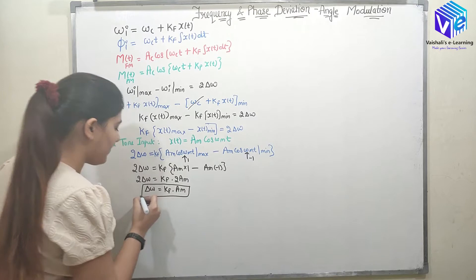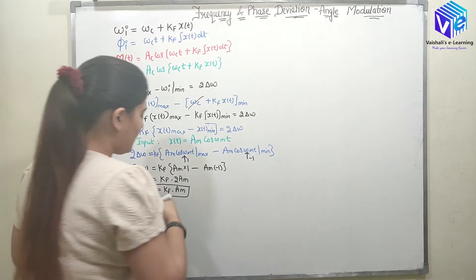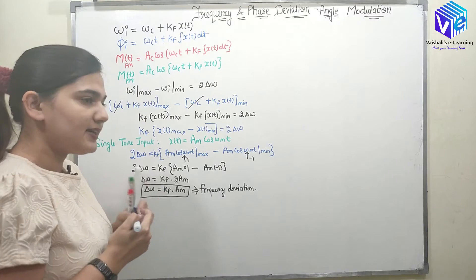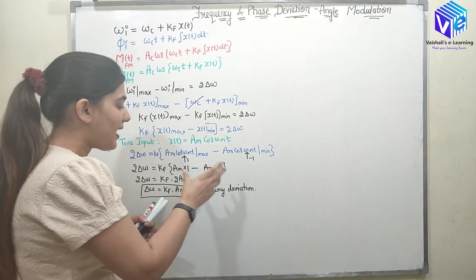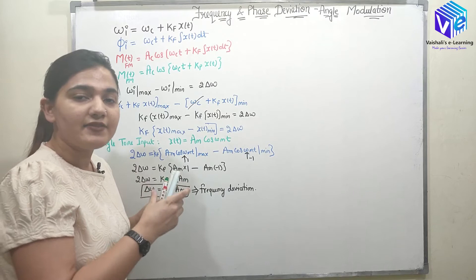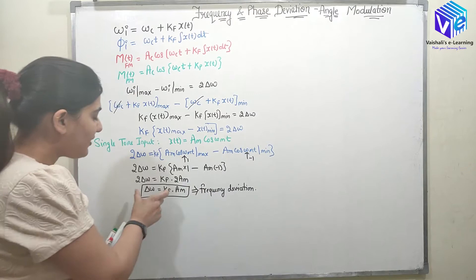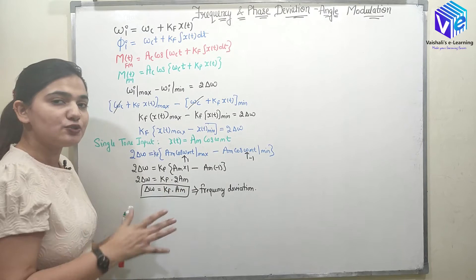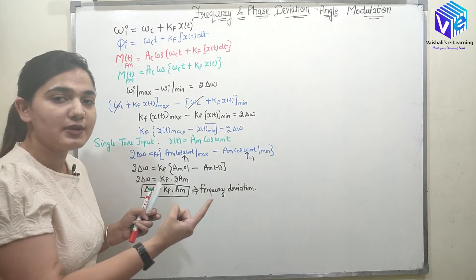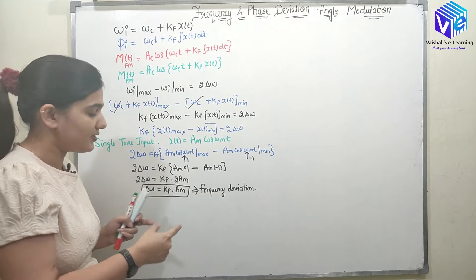So in the case of single tone input, delta_omega represents the frequency deviation. The maximum frequency deviation means the maximum variation of frequency — it is the difference between the highest and the lowest frequency in the modulated signal. This is my delta_omega.